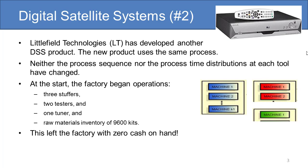Specifically, on day zero, the factory began operations with three stuffers, two testers, and one tuner, and a raw materials inventory of 9,600 kits. This left the factory with zero cash on hand.